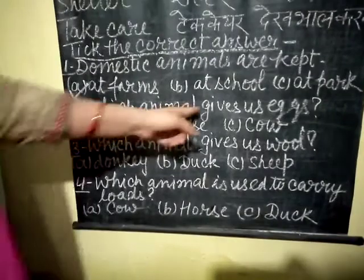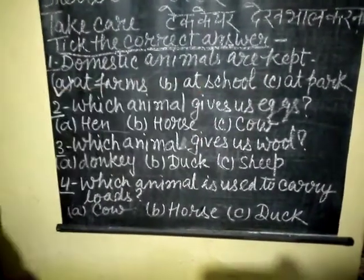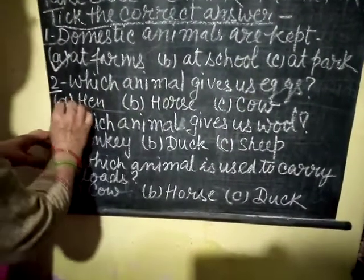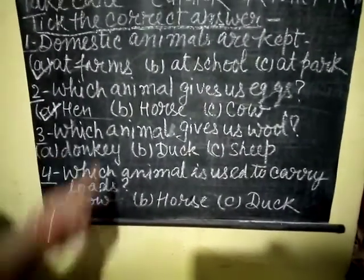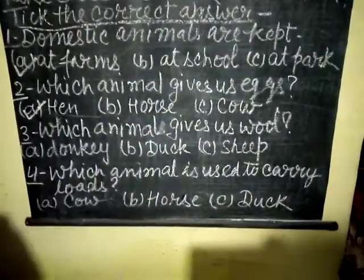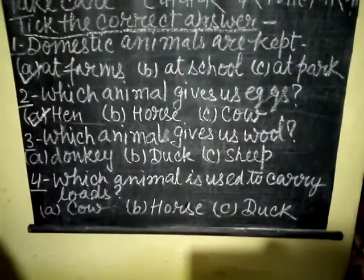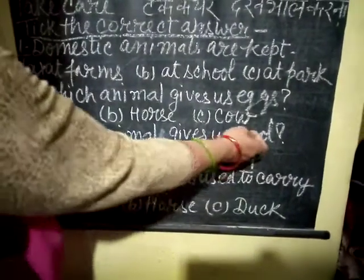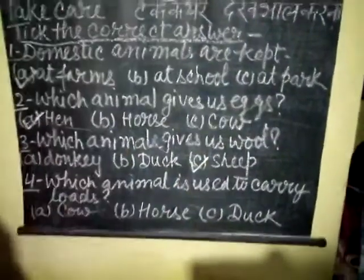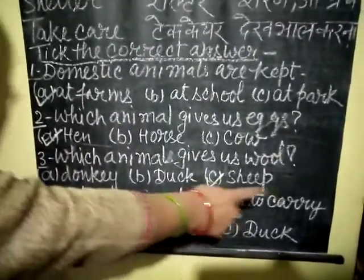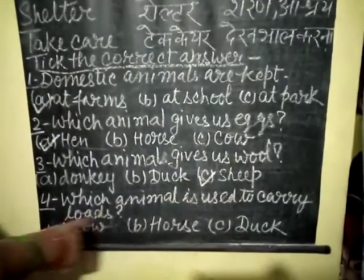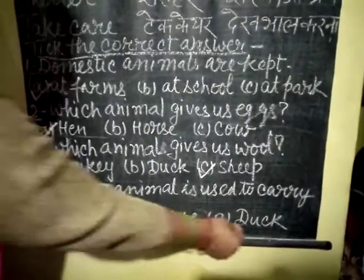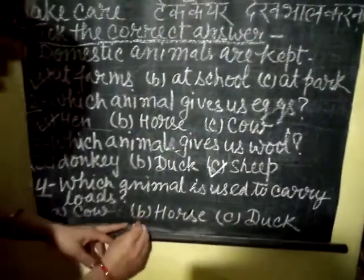Which animal gives us eggs? Which animal gives us wool? Options are donkey, duck, sheep. So the right answer for wool is sheep. Which animal is used to carry loads? Options are cow, horse, duck. So the right answer is horse.